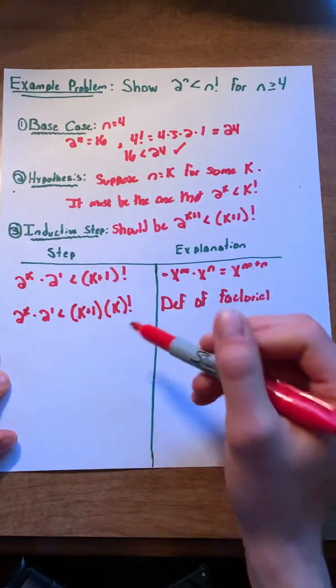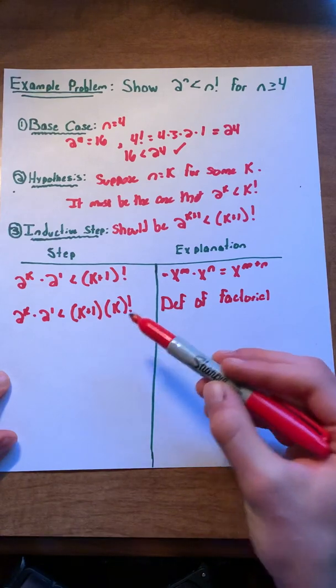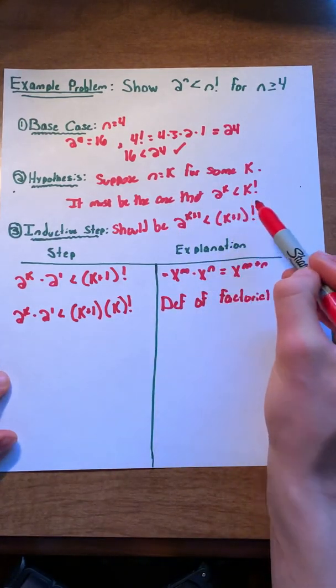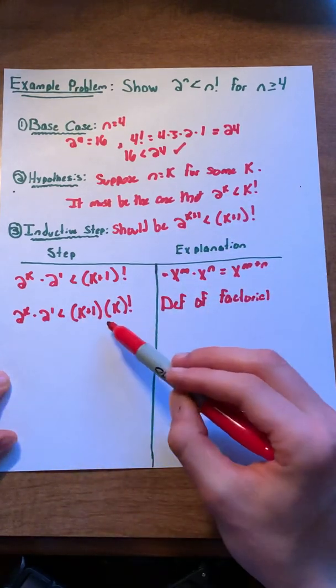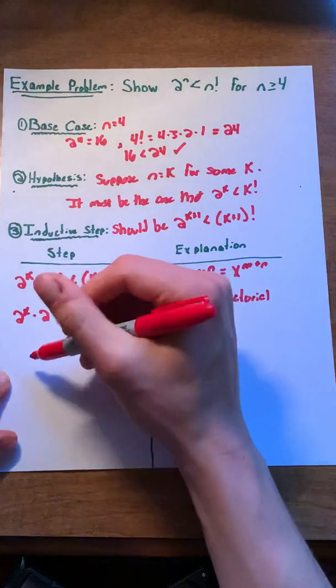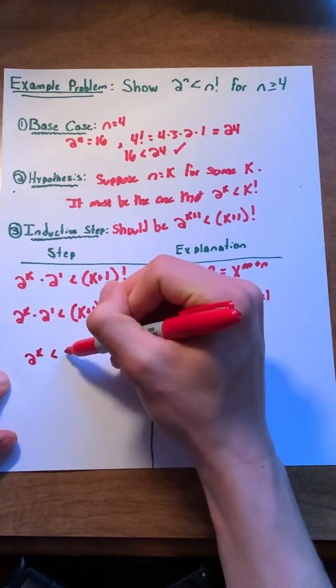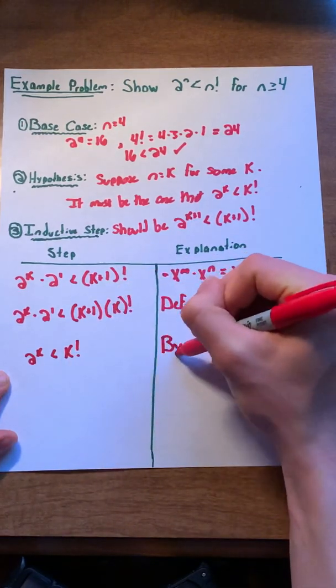Now, we get to invoke our inductive hypothesis. In our inductive hypothesis, we said that 2 to the k is less than k factorial. Right now, we have a 2 to the k and we have a k factorial. So we can say, okay, 2 to the k is less than k factorial, and this is by our inductive hypothesis.